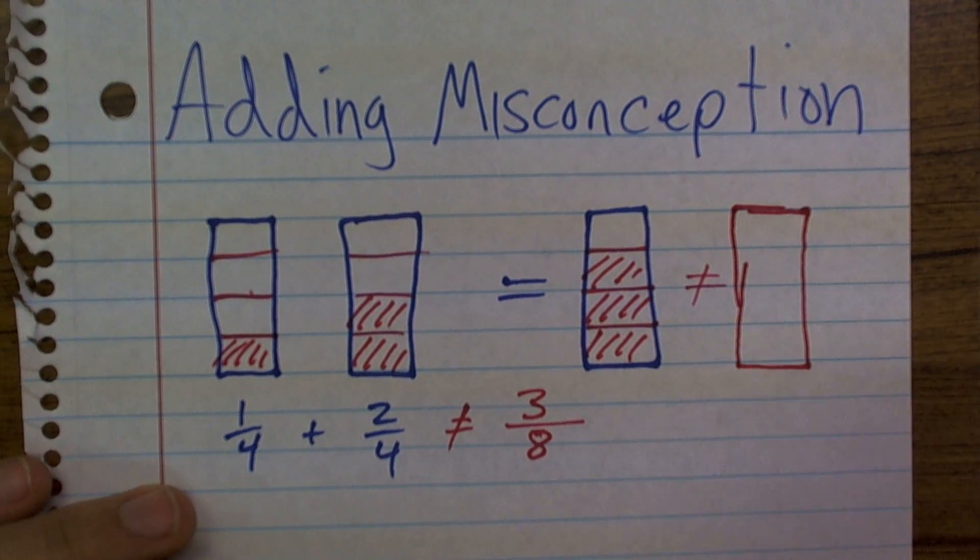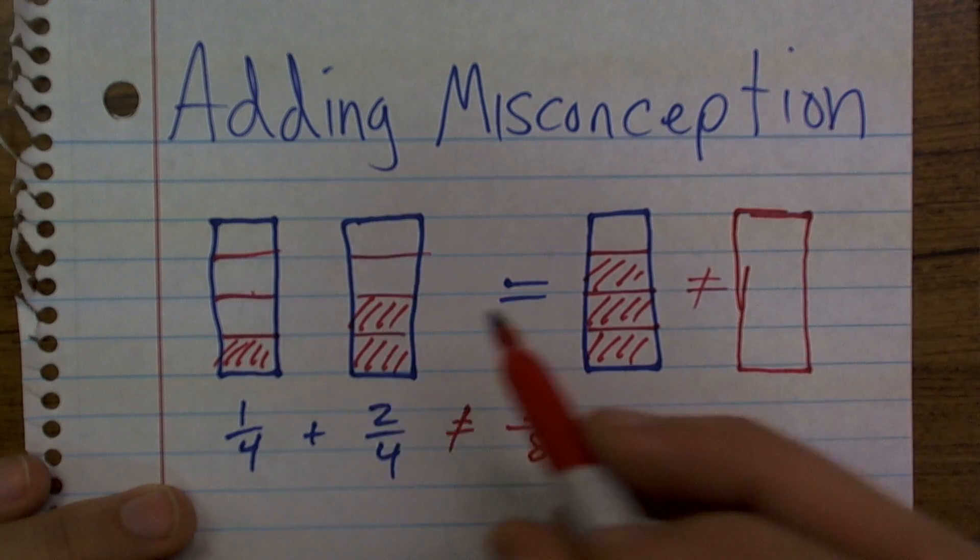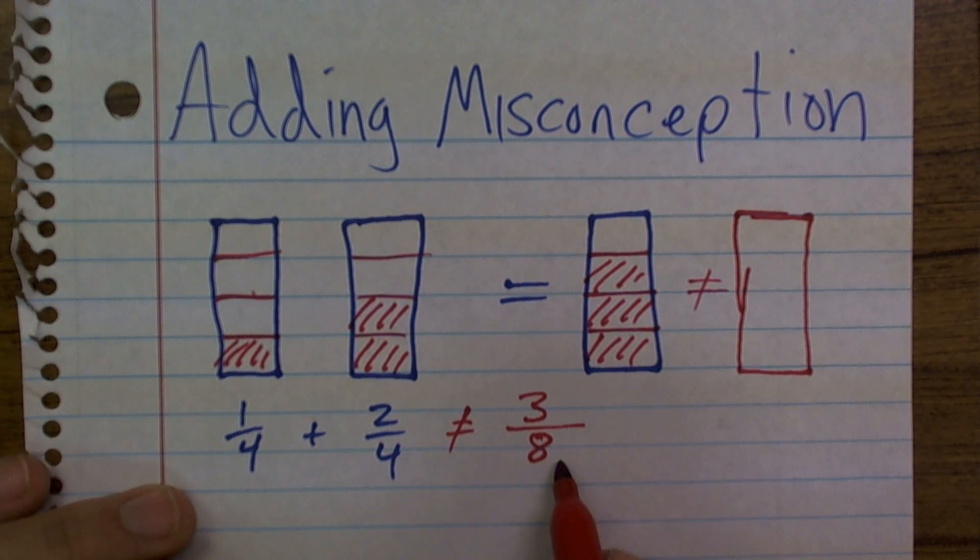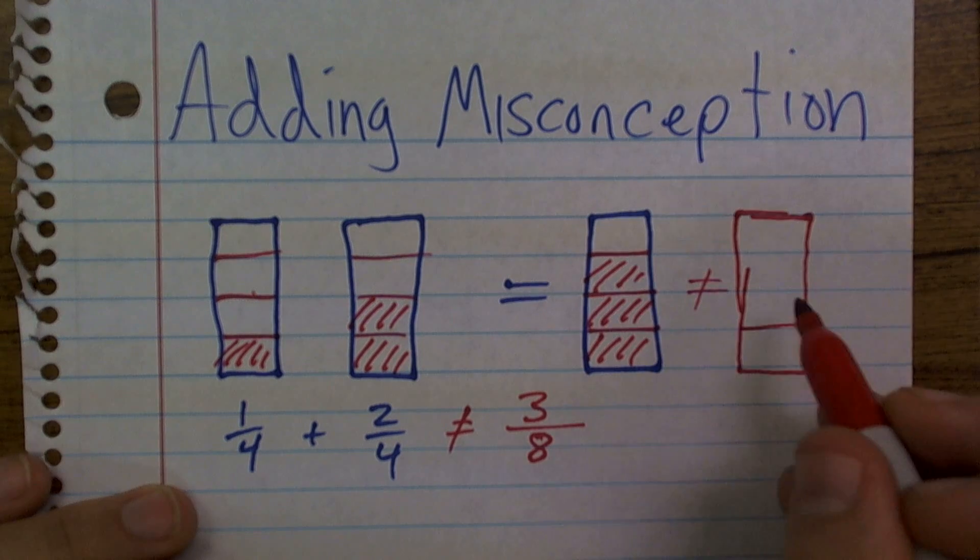when students add the numerator and the denominator, what happens is now instead of cutting it into four slices, now you've broken up the same whole into eight separate parts.